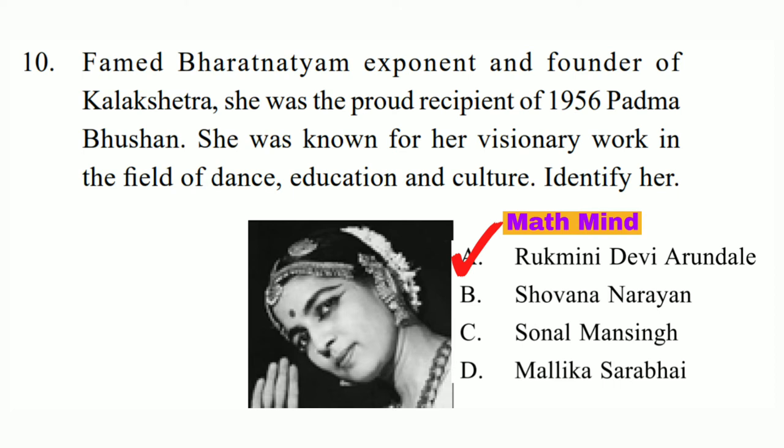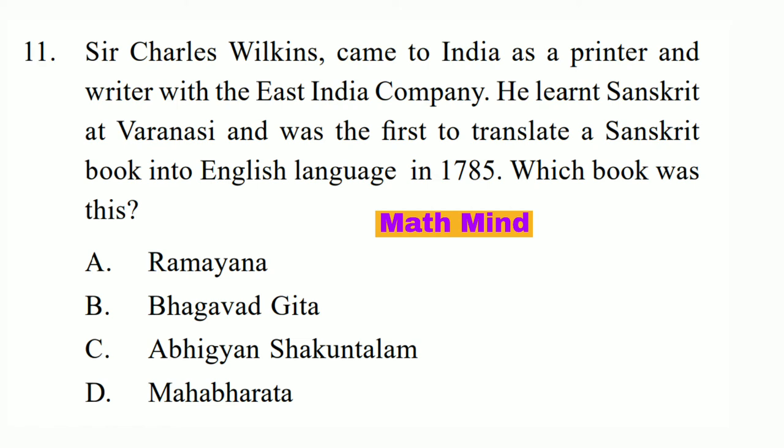Question No. 11. Charles Wilkins came to India as a printer and writer with the East India Company. He learned Sanskrit at Varanasi and was the first to translate a Sanskrit book into the English language in 1785. Which book was this? Option B is correct: Bhagavad Gita.